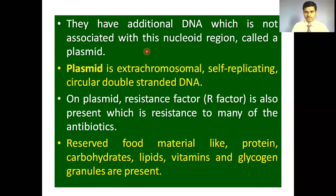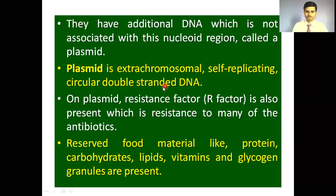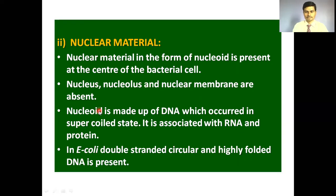Additional DNA, extra to the nuclear region, is called the plasmid. The plasmid is extra-chromosomal — additional to the main chromosome — and is self-replicating, meaning it can form its own copy. It is circular and double-stranded. On the plasmid, a resistance factor (R factor) is present, which confers resistance to many antibiotics. The bacterial protoplasm also shows reserve food materials like proteins, carbohydrates, lipids, vitamins, glycogen, and granules.